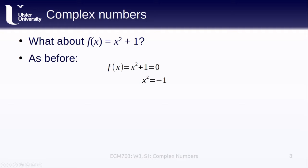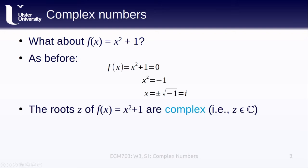So we have to move beyond the conventional math that we might be used to, and we do this by defining the square root of -1 to be a number i, and the roots of f are then given as plus or minus i. We say that the roots z of this polynomial are complex. You may also see it written this way, and this notation just means that z is part of or in the set of complex numbers denoted by this fancy C.